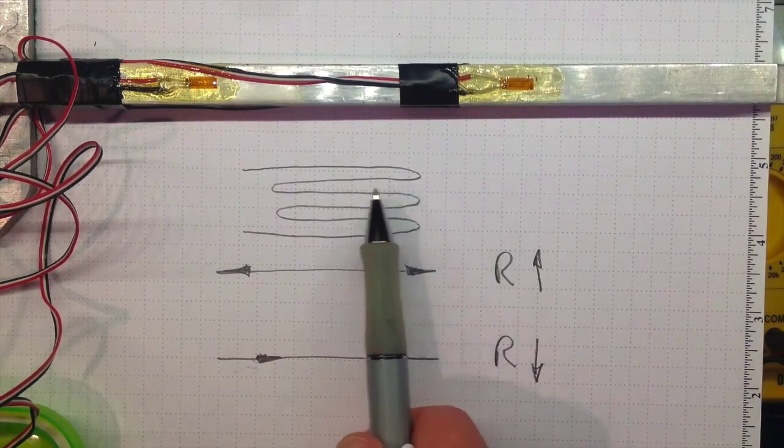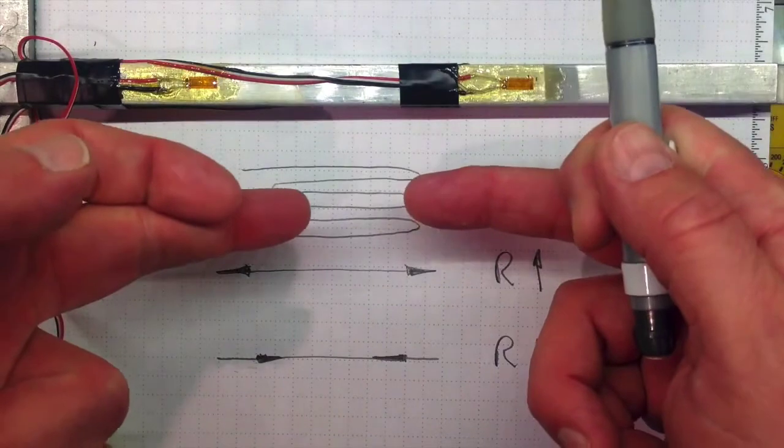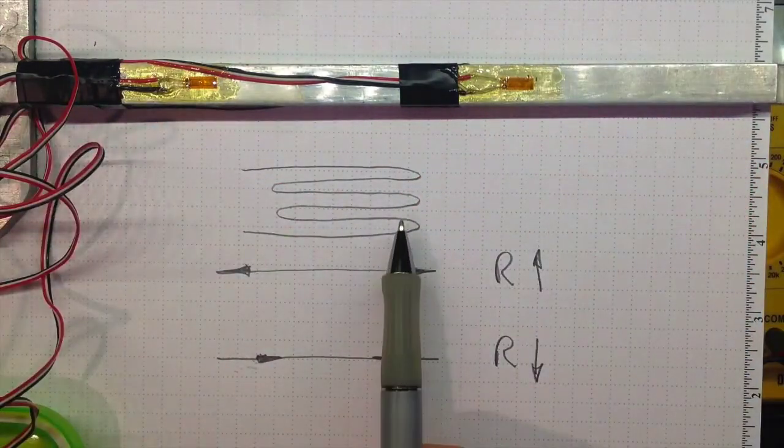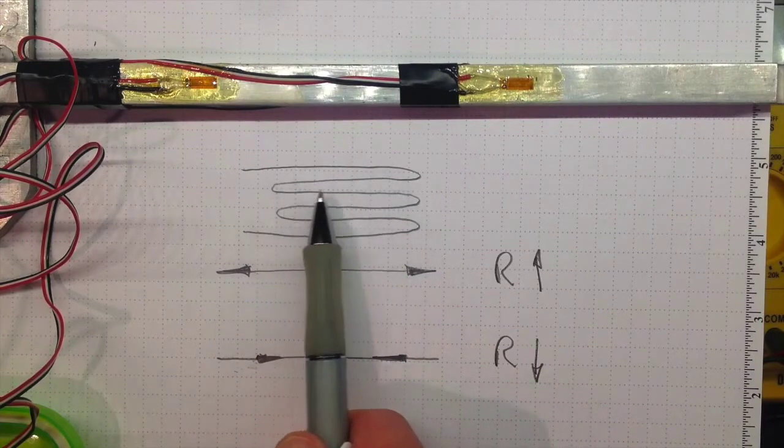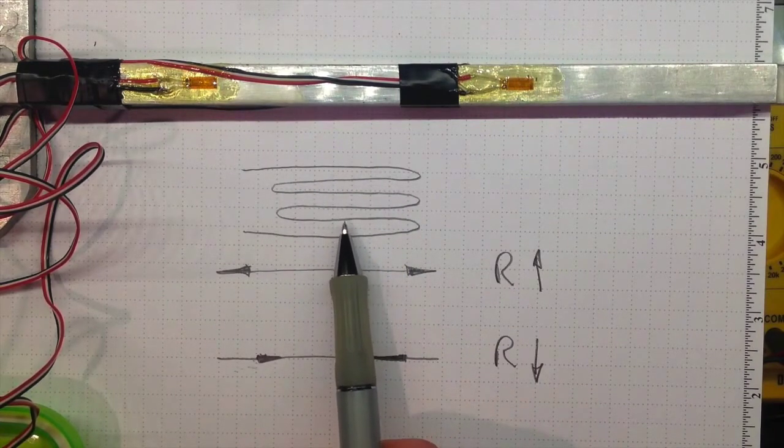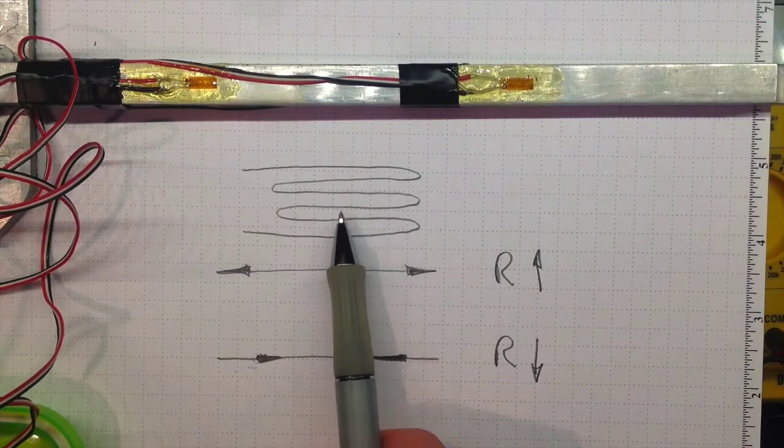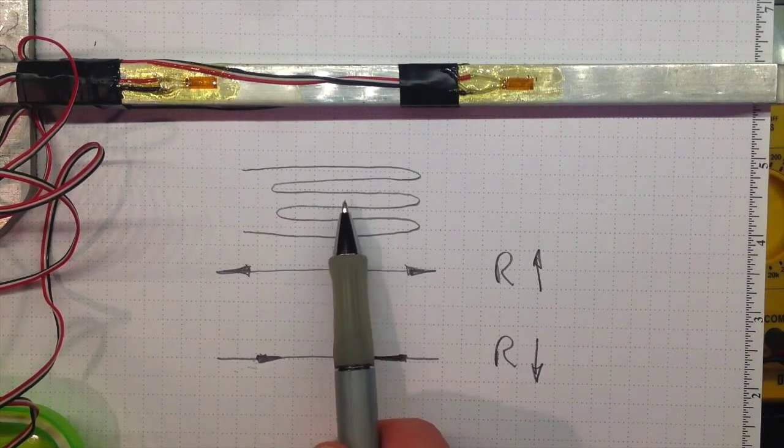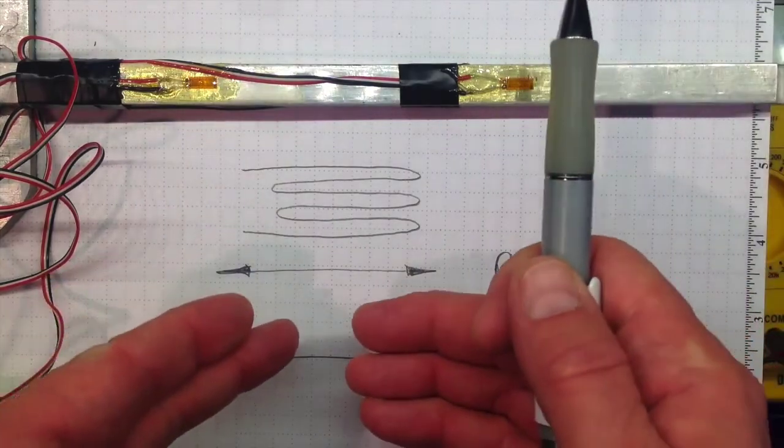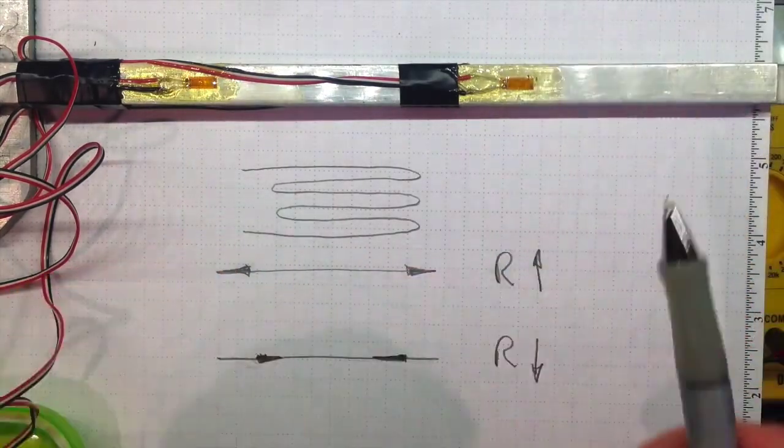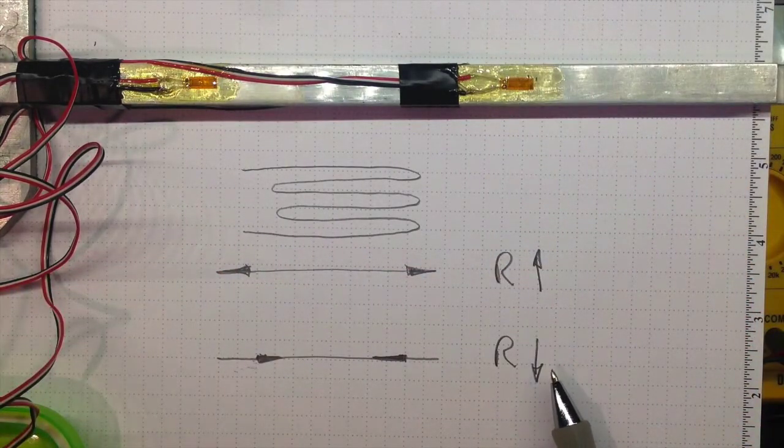Likewise if we compress the strain gauge, if we push it closer together, then the distance along each conductive path becomes shorter. Each conductor becomes wider in cross section and it relaxes the crystal structure. So the result is when we compress the strain gauge, when we push it together, the resistance goes down.